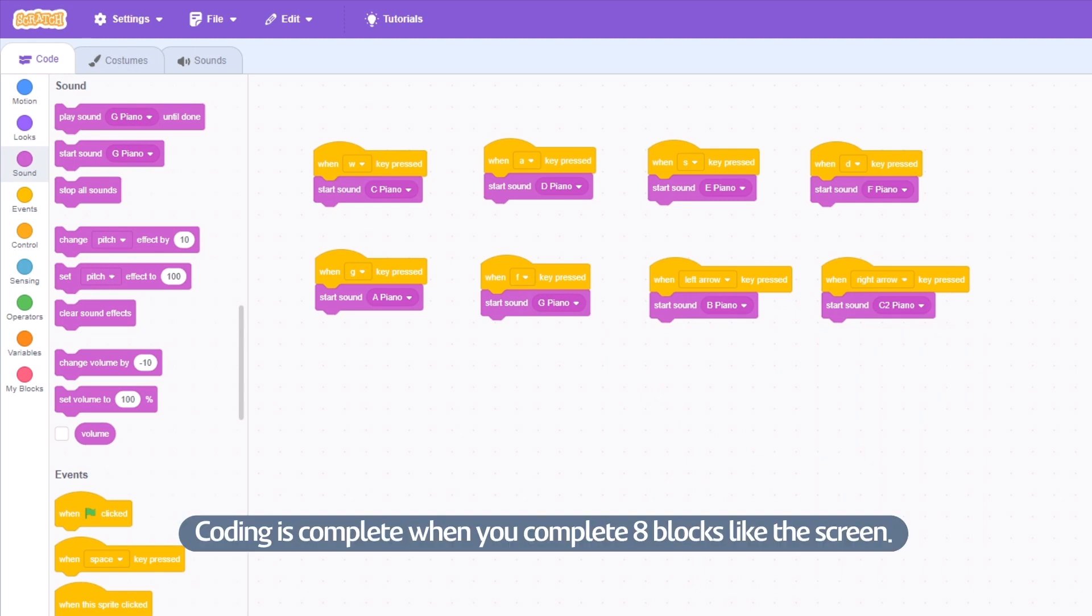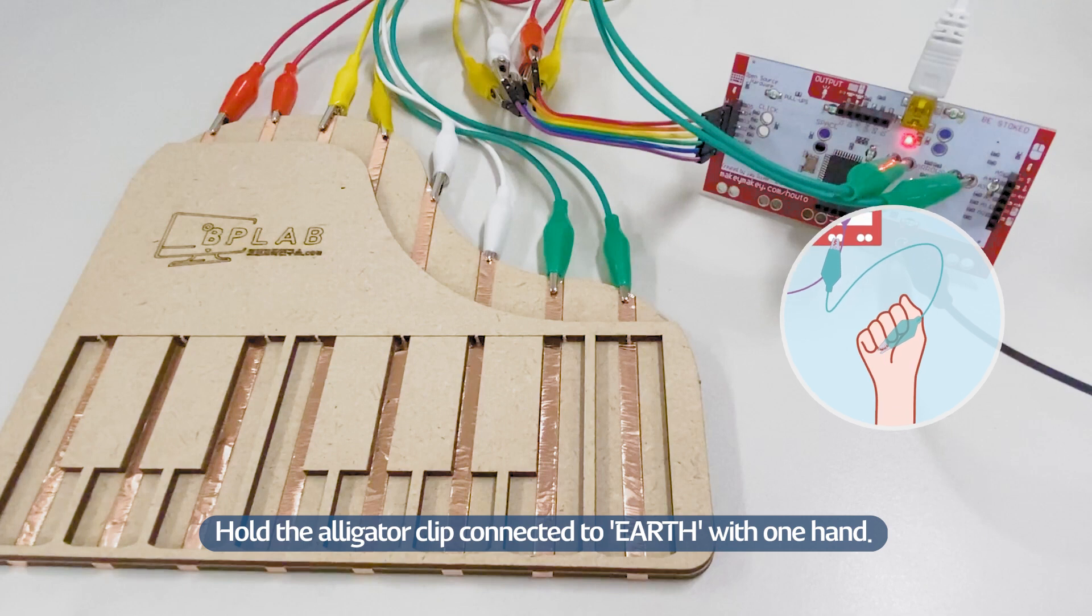Coding is complete when you complete eight blocks like the screen. Hold the alligator clip connected to the earth with one hand. Try playing the piano with your opposite hand.